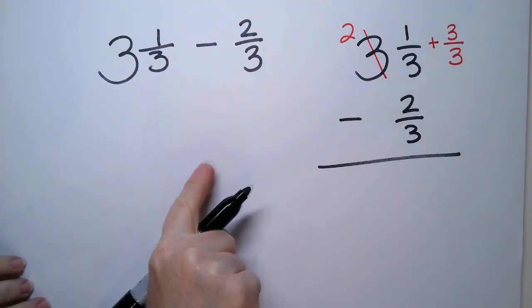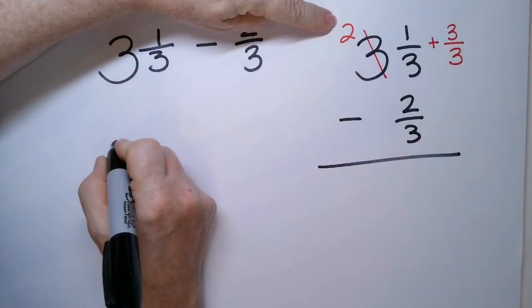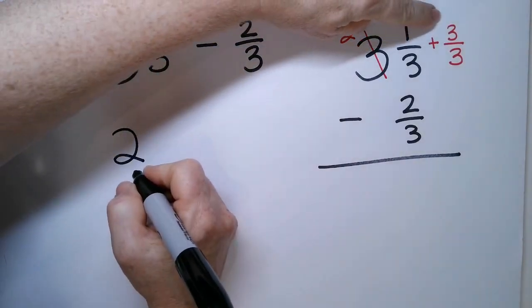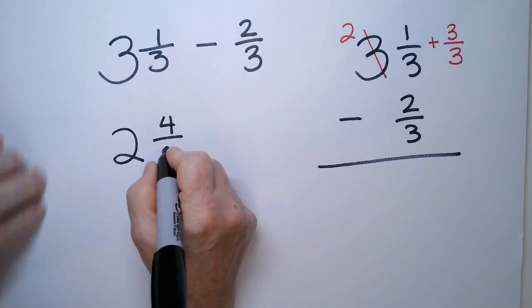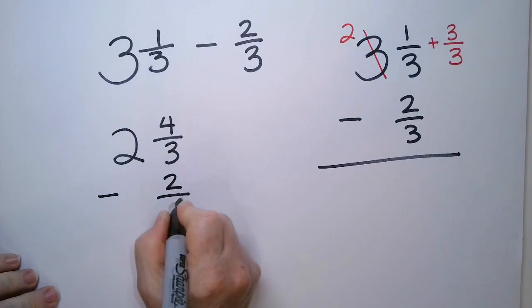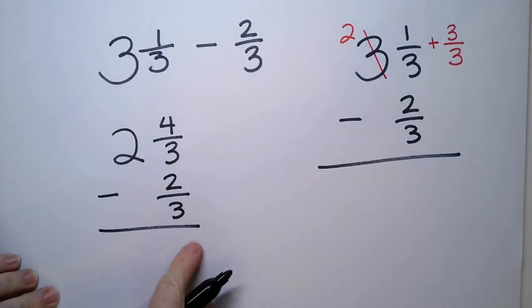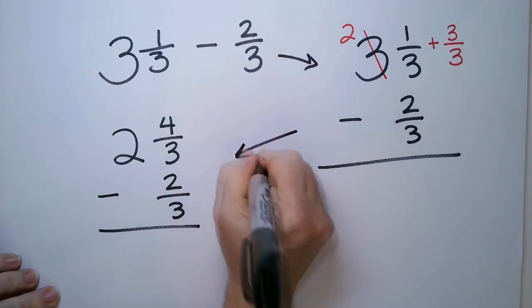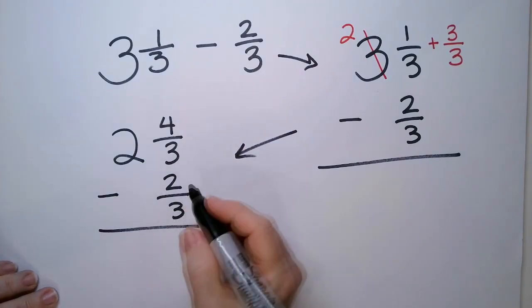So I'm going to rewrite this problem. I'll write it over here. So this is the whole number two. Three plus one is four and the denominator is thirds. So this is this top line right there. Minus two thirds. Do you see now it's in a form that is easier for me to take a look at? For me to work with.